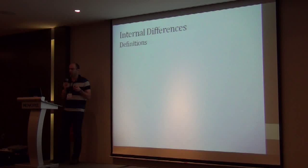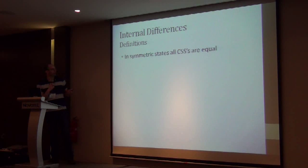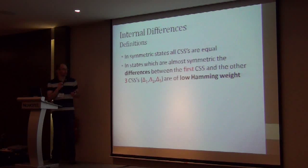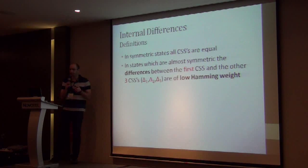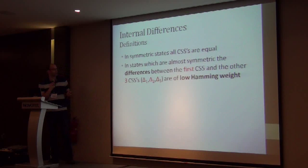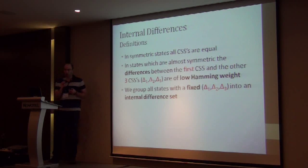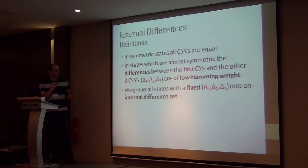In almost-symmetric states, the differences between the first CSS and the other CSSs — denoted delta one, delta two, delta three (for the case i equals 16 with four consecutive slice sets) — are of low Hamming weight. We group all states with a fixed value of delta one, delta two, delta three into what we call an internal difference set. The weight of an internal difference set is the lowest Hamming weight in that set.